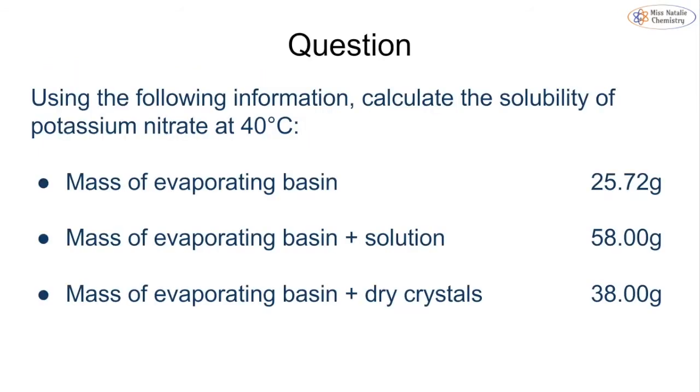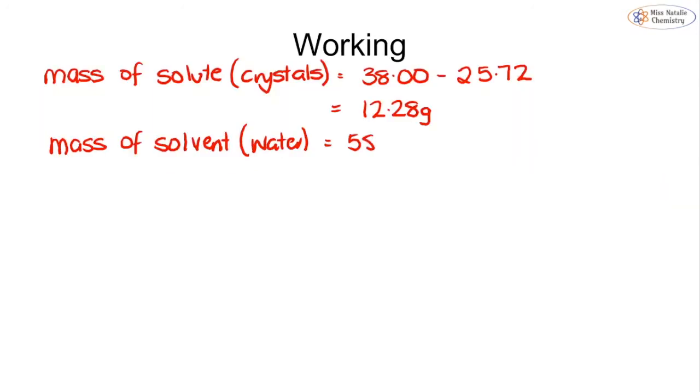Again, I can look at the information where we were able to see that if we have the mass of the basin and the solution it was 58, but when we removed all of the water and evaporated it we went down to 38. So very simply we do 58.00 minus 38.00 and it gives us a value of 20.00 grams.